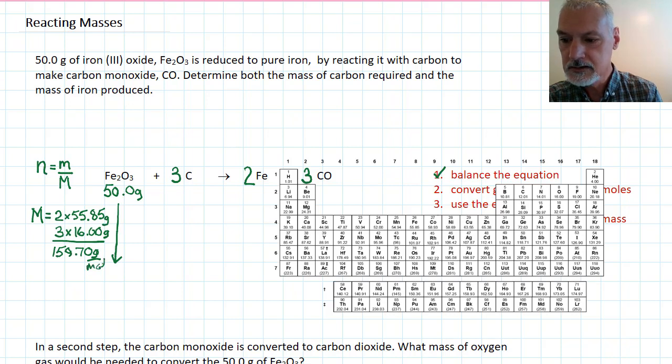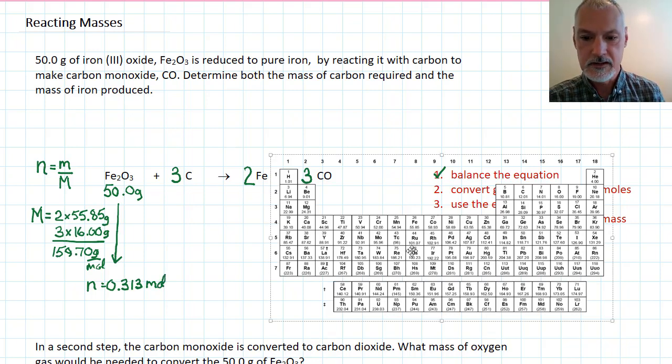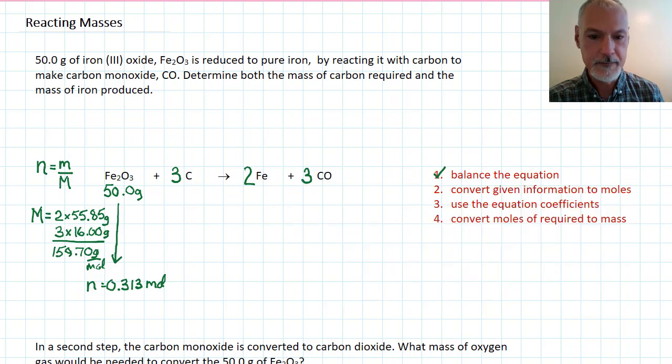So, that's my molar mass. So, taking 50 and dividing it by 159, I arrive at the number of moles in 0.313 moles. Let's move that back out of the way. So, I've essentially completed now the second step. I've converted my given information to moles.